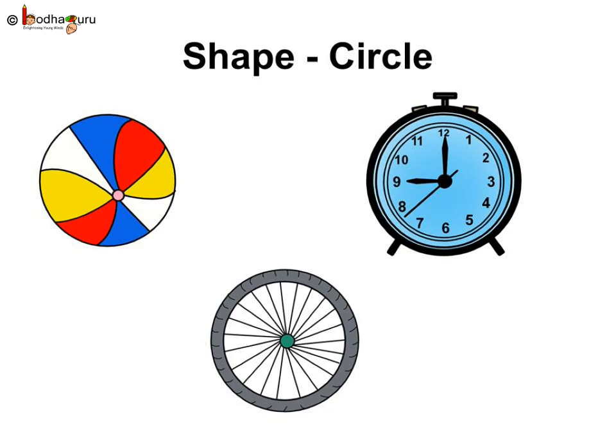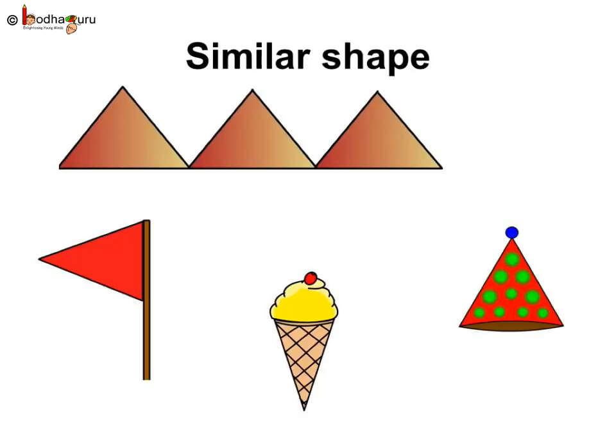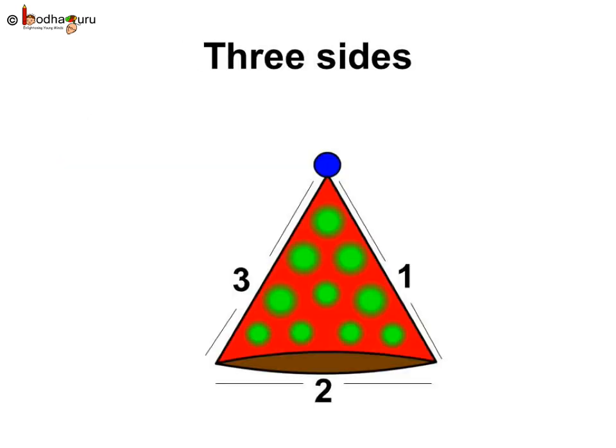A hill, birthday party hats, a sail in the sail boat, some flags. All these look similar. They all have three sides. This type of shape is called a triangle.